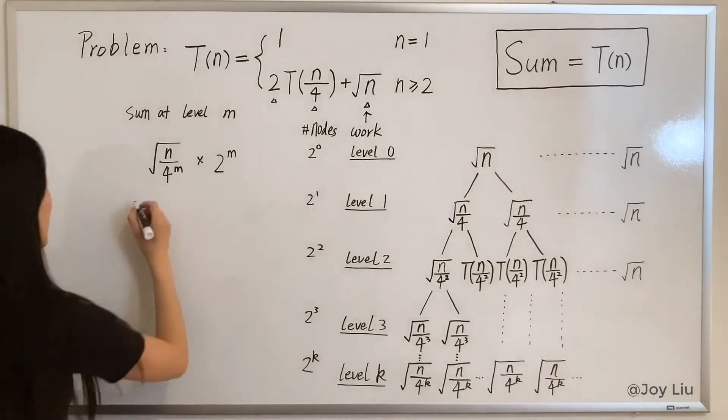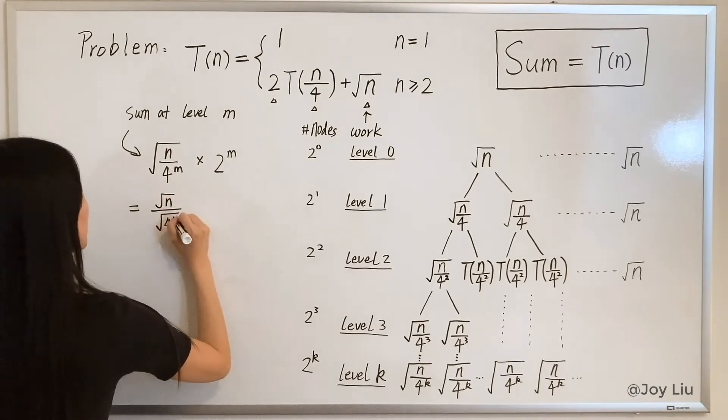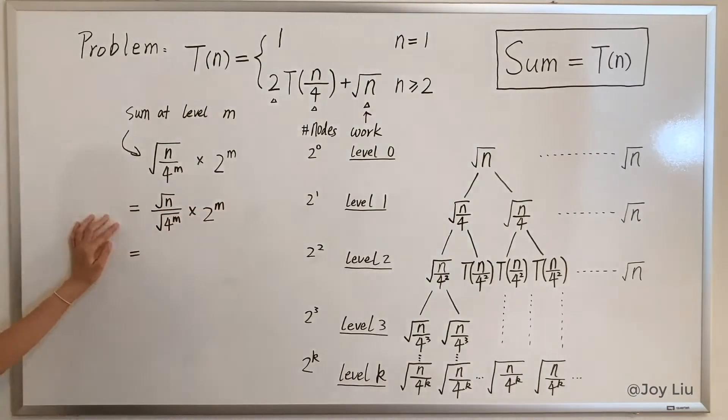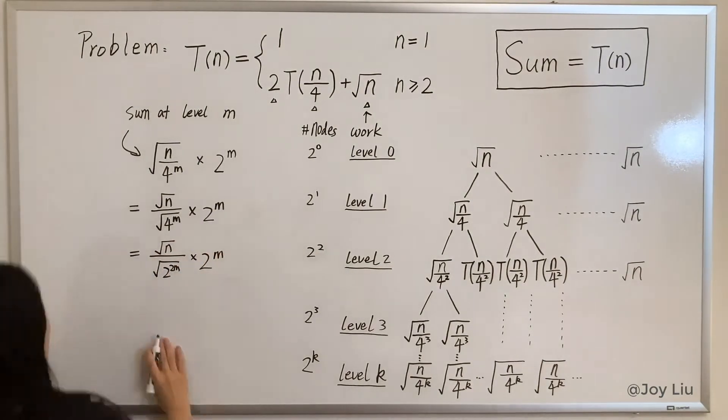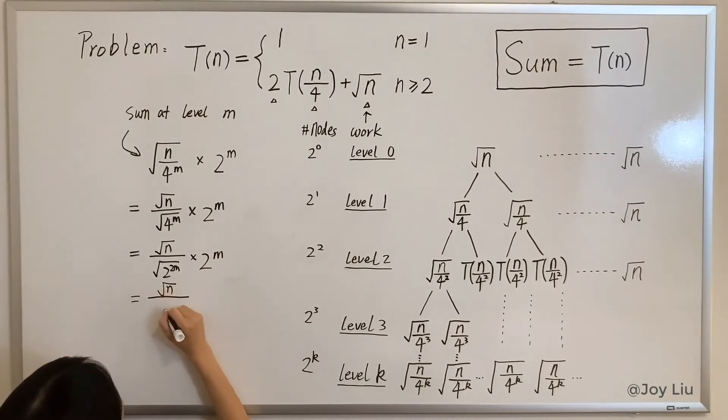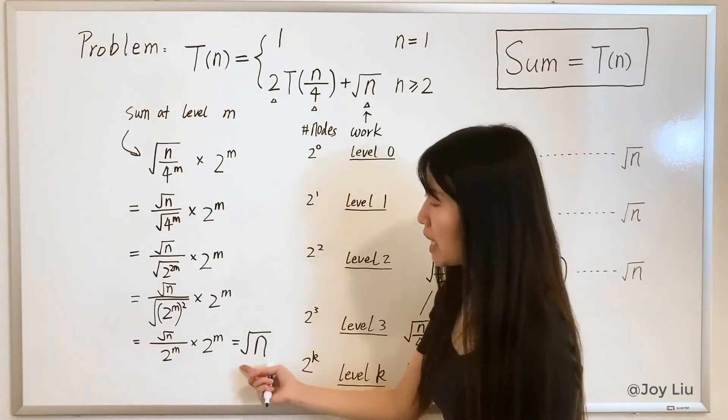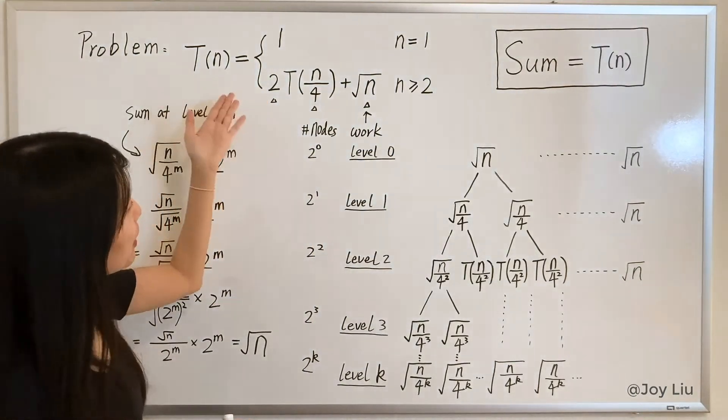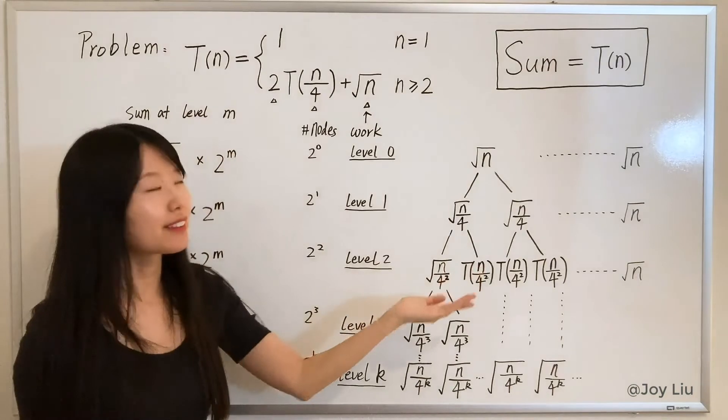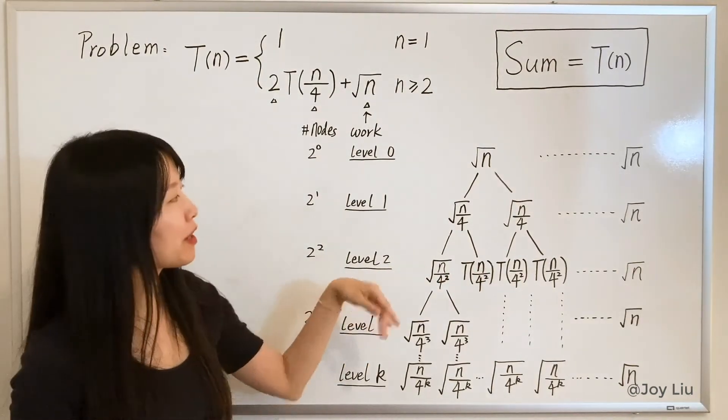So this is the sum and let's just simplify. And it turns out it's square root of n. Just one quick tip, if here it's not 2 it's 3, it wouldn't work, it wouldn't be this easy. That was just a proof of why the sum of each level would be this number.